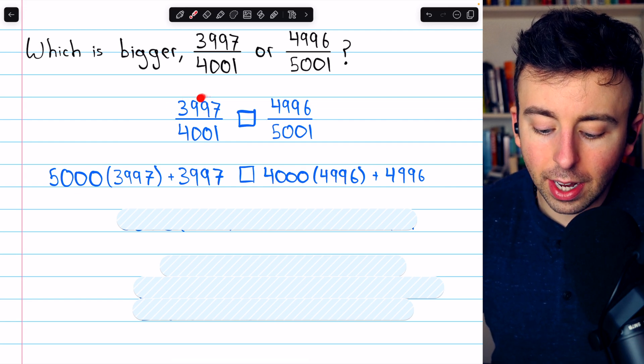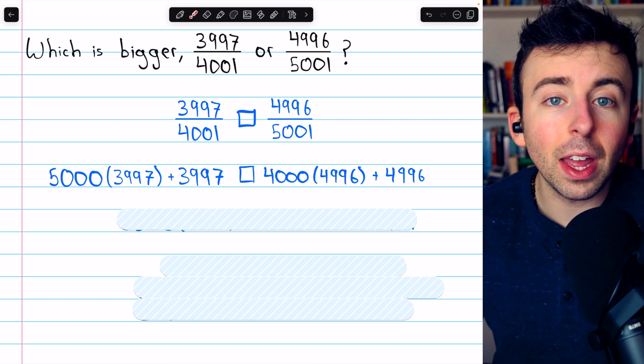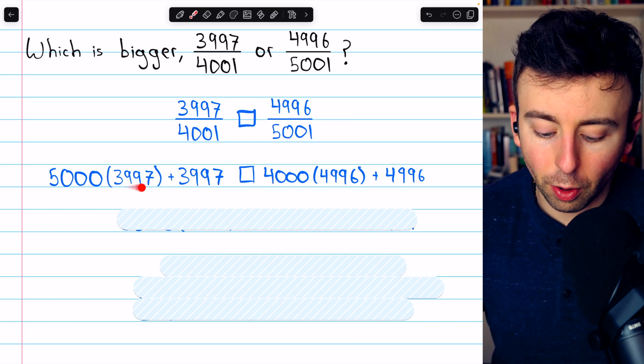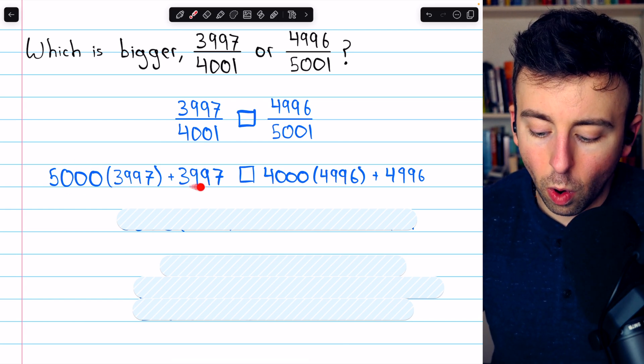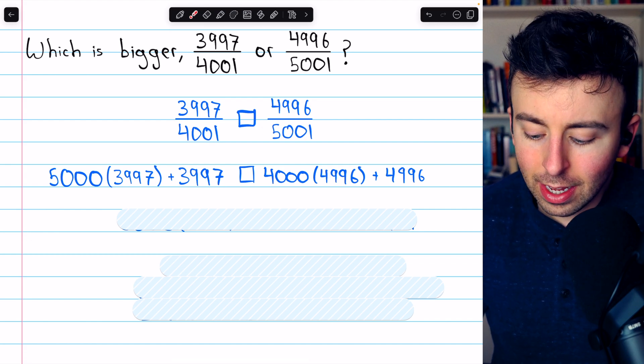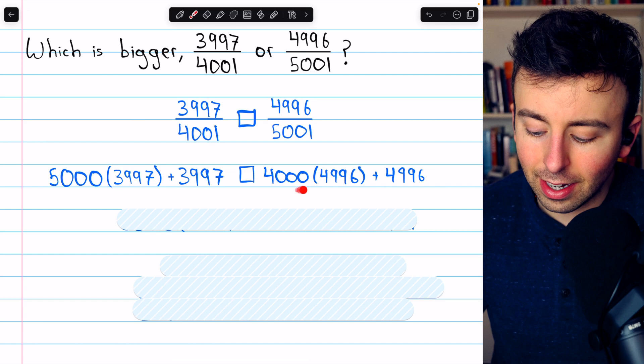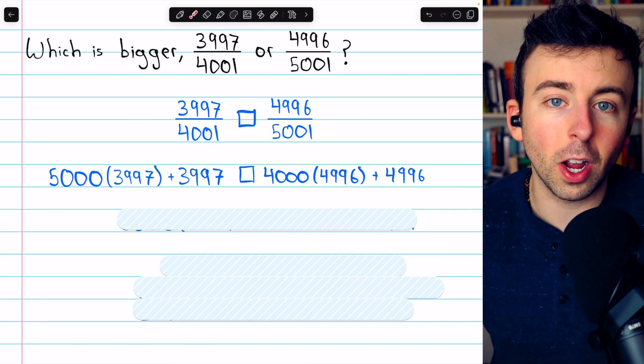When we multiply 3,997 by 5,001, that means we have 5,000 copies of 3,997 plus one extra copy. Same thing on the right side, 4,000 copies of 4,996 plus one extra copy.